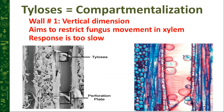Here's the tylosis formation — the tree's defense against the advancing fungus. These balloon-like structures called tyloses expand to block off the vessel and restrict movement in the xylem. In Alex Shigo's compartmentalization theory, this is 'wall one,' which restricts movement in the vertical dimension above or below a wound or invasion.